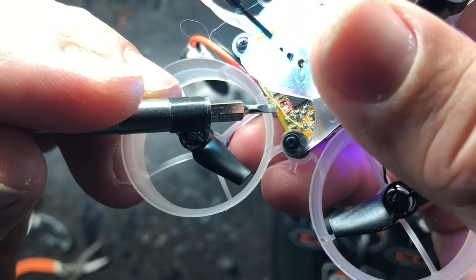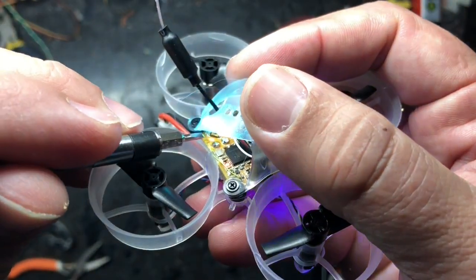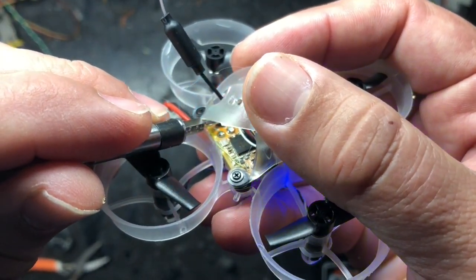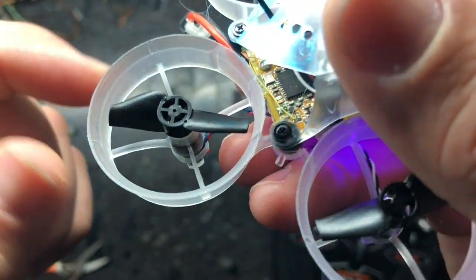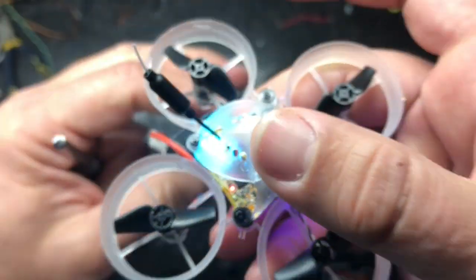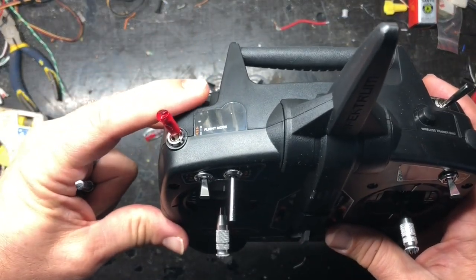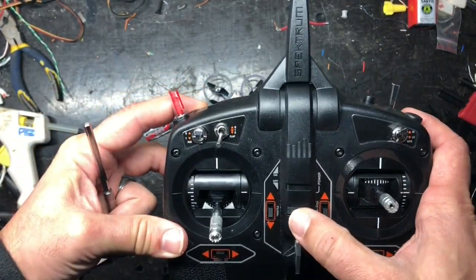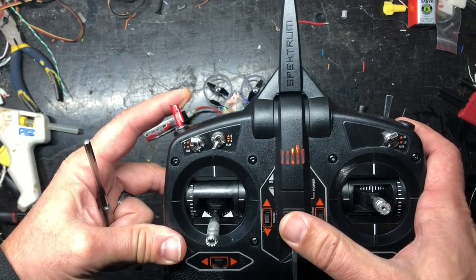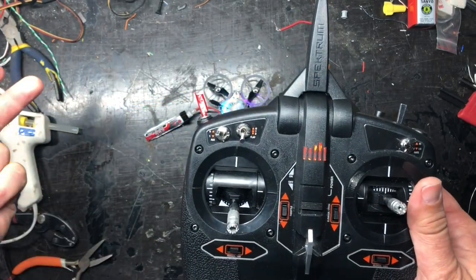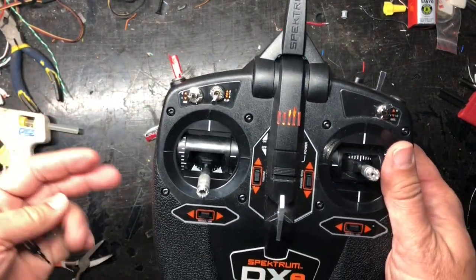I hit this button here, goes into a fast flash, means I'm in bind mode again. I hold my bind button down with my finger while I turn on the radio, and I'm bound. It's that easy. Now the cool thing with this drone as compared to our Inductrix Pro that we were using in our old build kit, this one will automatically stay bound to this radio.